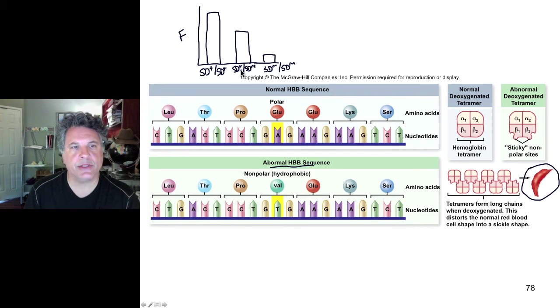They still have a wild type allele, so they're able to carry, their red blood cells are not all going to sickle under low oxygen or deoxygenated conditions. So this would be the situation, let's say, in Europe.